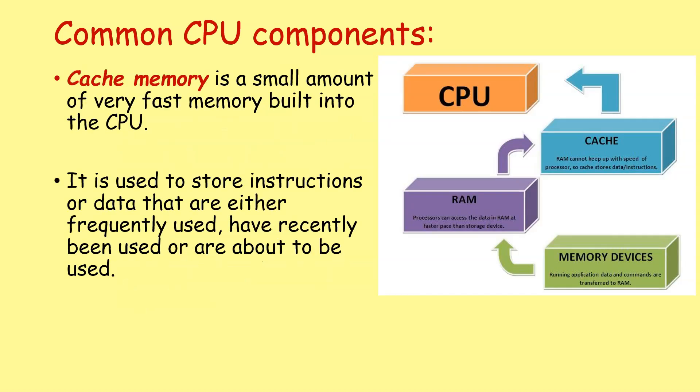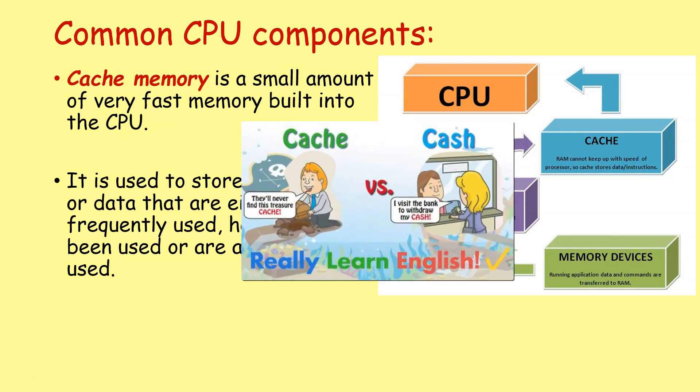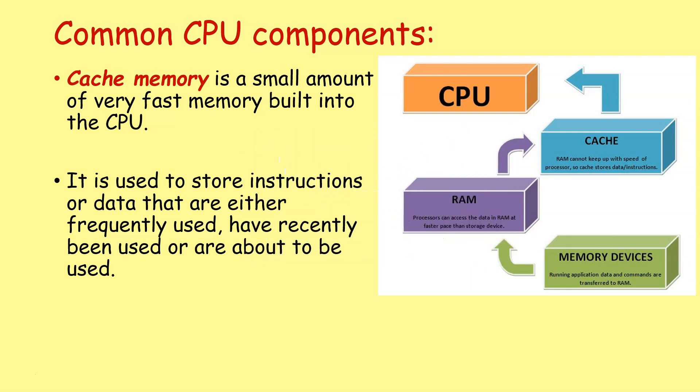Another important CPU component that you need to know about is cache memory. So that's C-A-C-H-E, not C-A-S-H. That's very different. Cache memory is a small amount of very fast memory built into the CPU. It is used to store instructions or data that are either frequently used, have recently been used, or about to be used in the near future. Now it's very easy to get cache memory and registers confused. CPUs must have registers. They hold the instructions and data that are being worked on right that very instant.